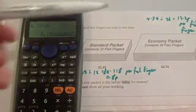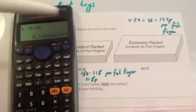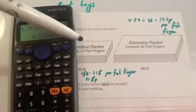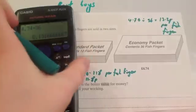Therefore, because this one's 13.2 pence per fish finger and this one's 11.8 pence per fish finger, this option, the standard pack, is actually best value for money.